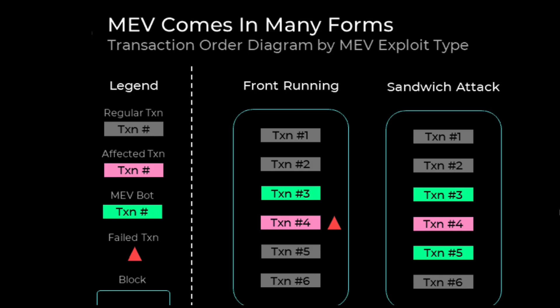One approach a miner can use to exploit this is by duplicating and broadcasting the same transaction but with a higher gas price. As you probably know, if you increase the gas price for a transaction, the chance that miners sort your transaction first is higher. So by increasing the gas price within an algorithm, the miner essentially front-runs the original transaction.